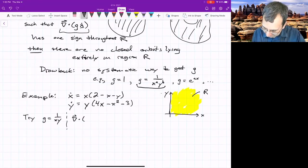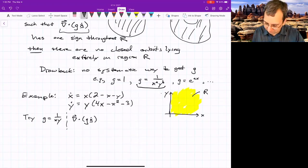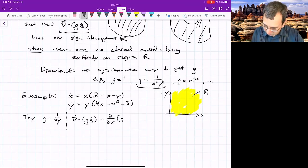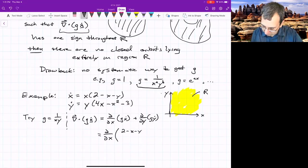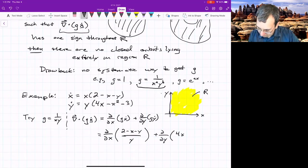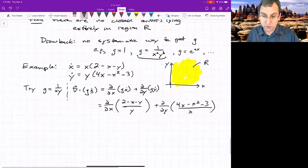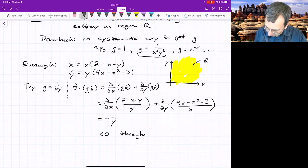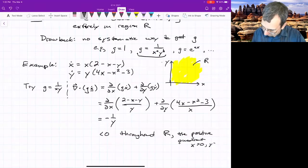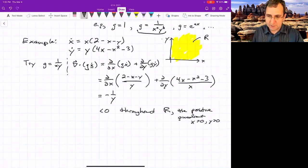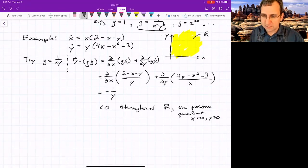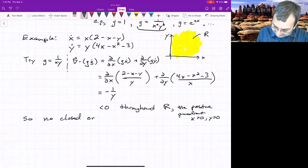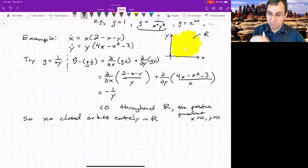Then we can calculate this thing. The divergence of G times X dot is equal to what? This is just partial partial X of G X dot plus partial partial Y of G Y dot. This becomes 2 minus X minus Y over Y, and then plus partial partial Y of 4X minus X squared minus 3 over X. Work out what those partial derivatives are, and you get that this is negative one over Y. So that means this is going to be less than zero throughout our positive quadrant where X is greater than zero, Y is greater than zero. It's a simply connected region and G is continuously differentiable over R and so is F. So Dulac's criterion implies that there's no closed orbits entirely in R. There might be closed orbits that cross around, but at least we know there's nothing entirely in R.